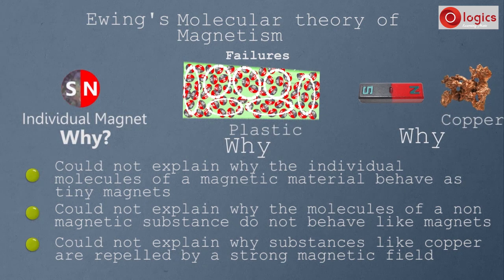The main reason for these failures is that at the time of Ewing, it was known that molecules exist, but not much was known about the molecule or its properties. Later, properties of molecules were understood by many scientists, and many theories evolved which explained these failures — which we will learn in later sessions.